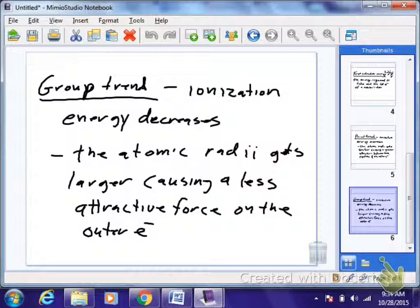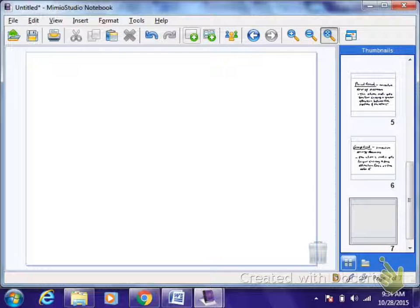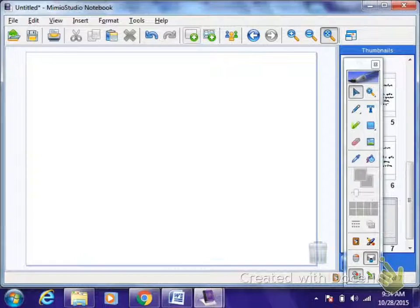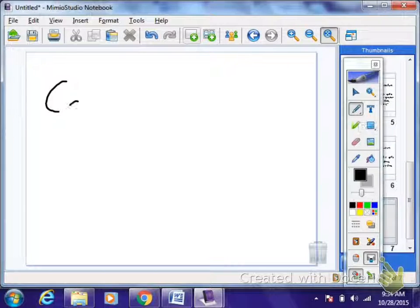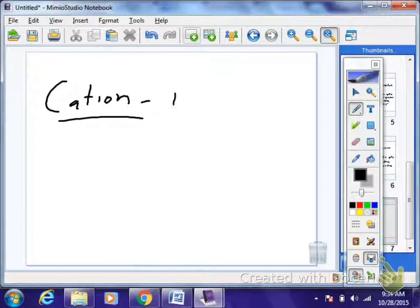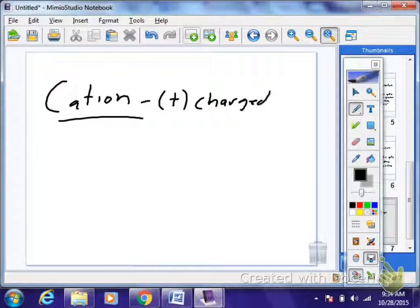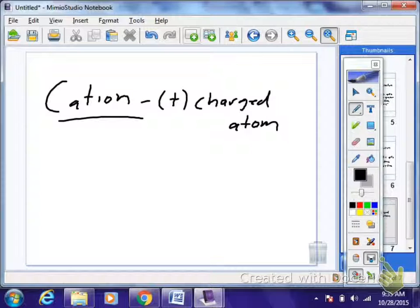To do that we need to look at the definition of a cation. Does anybody have a definition of a cation? Cameron, a positively charged atom, right. A cation with the T being positive. A cation is a positively charged atom. How did it get to become positively charged? Did it add an extra proton? No, it lost an electron.